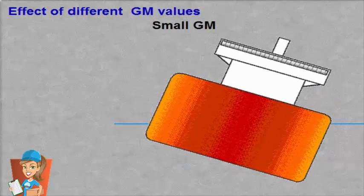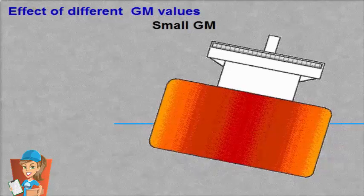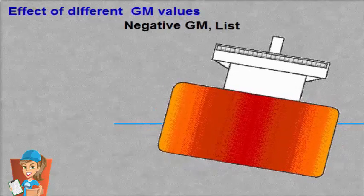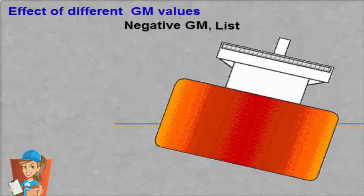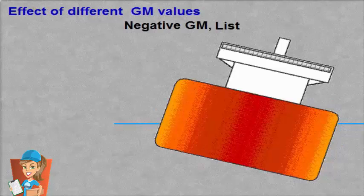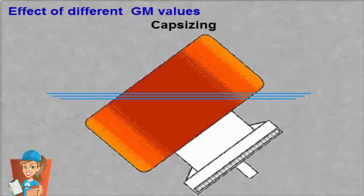A negative GM may result in a constant list if exposed by an external force. This is because G was higher than M, but after heeling, the GM might be positive again due to the changed volume of the underwater hull. A negative GM may also result in capsizing. G is higher than M and GM will not be positive before or after the capsizing.